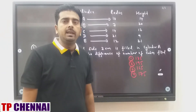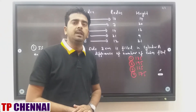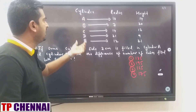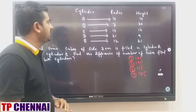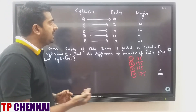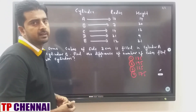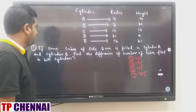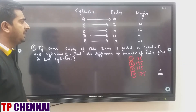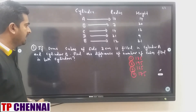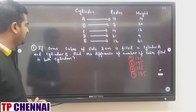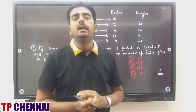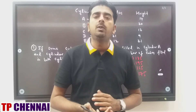Now we will see the second type of DI from the clerical mains examination. They have given you five different cylinders: A, B, C, D, E, with radius and height given for each. Five questions are asked. First: if some cubes of side 2 cm are filled in cylinder A and cylinder B, find the difference in the number of cubes filled. Number of cubes = volume of cylinder divided by volume of cube.